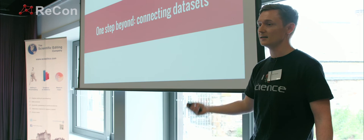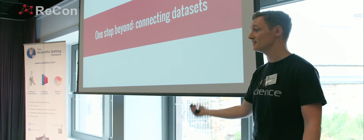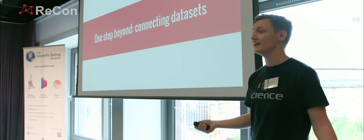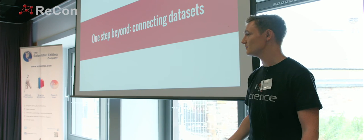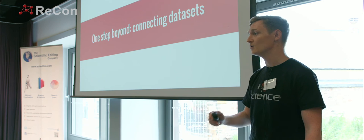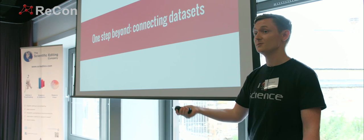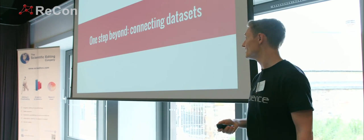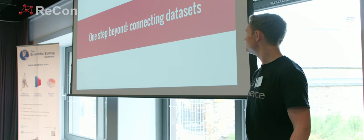So at Digital Science we built a data set — it's now at 60,000 research organisations. It's called GRID. GRID.ac — if you do any work with research organisations and refer to them, please come and check it out. It's completely free. The only licence requirement is that you put attribution on — just say somewhere that you used GRID. That's basically it. I will help you get started with it.